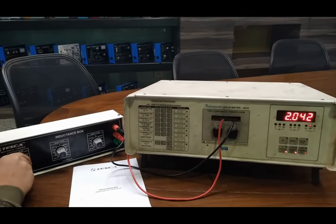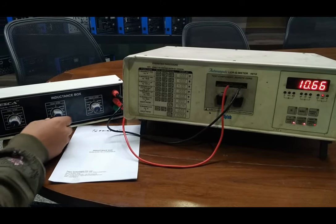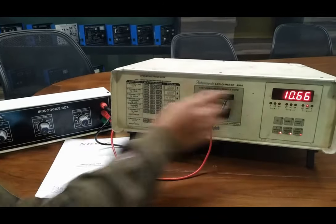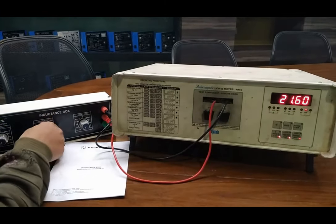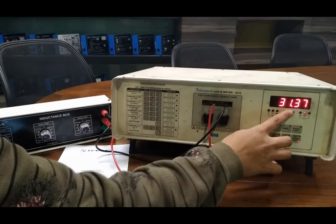Now turning off this knob. 10 mH, it is showing 10.66. 20 mH, 21.60. 30 mH, 31.36.